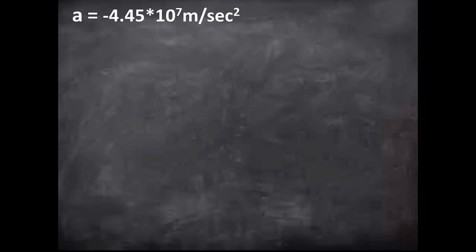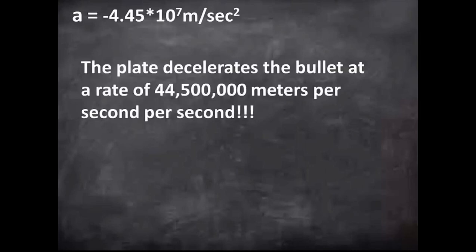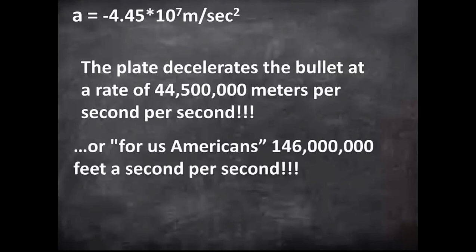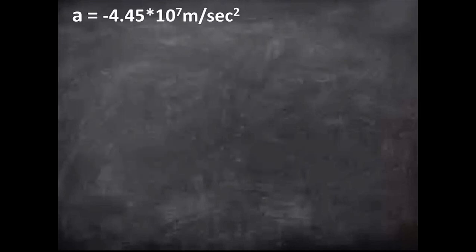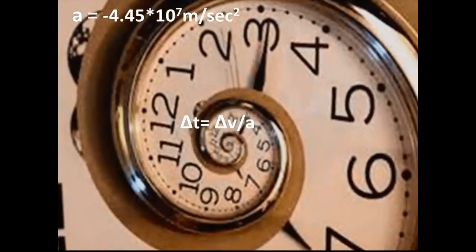Think about what this means. It means the plate decelerated the bullet at a rate of 44,500,000 meters per second, per second. Or for us Americans, that would be 146 million feet per second every second. We'll just keep this up in the corner, because just as we use the value we found for displacement to figure out acceleration, we're going to use this value for acceleration along with this equation to figure out time.